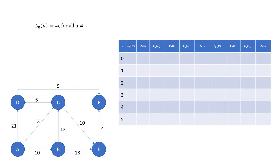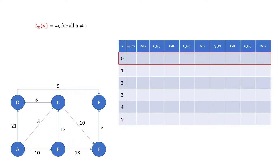To initialize the table, we are given two instructions. The first is that L0 of n is equal to infinity for all values of n where n is not equal to s. L0 of n means we're referring to the length of the route to each node n for the 0th iteration or h equals 0. We then make all of these route lengths equal to infinity. This provides us a starting point as it guarantees that any route found will be shorter than the current route length in our table.